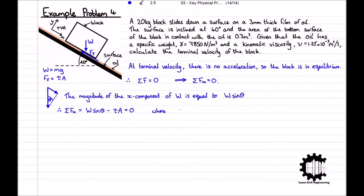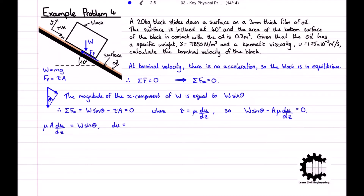Newton's law of viscosity says that tau is equal to mu times du by dz, where mu is the dynamic viscosity of the oil, dz is the thickness of the oil layer, and du is the velocity of the block, which is ultimately what we are trying to calculate. Substituting this into our equation for the sum of forces in the x-coordinate plane, we get W sine theta minus A mu du by dz equals zero. Rearranging for du, we get du equals W sine theta times dz all divided by mu times A. Now we have an expression where we already know or can calculate the values for every variable other than the velocity.